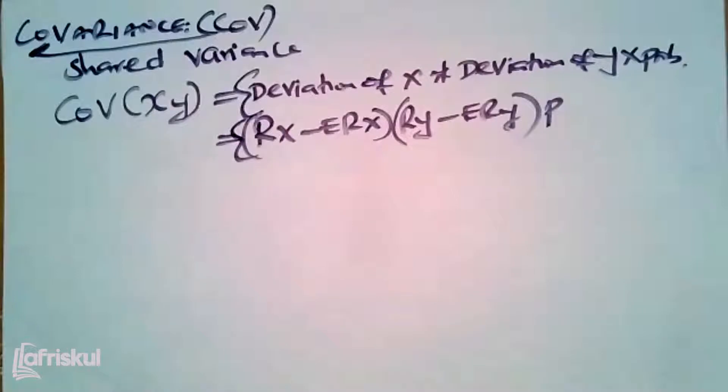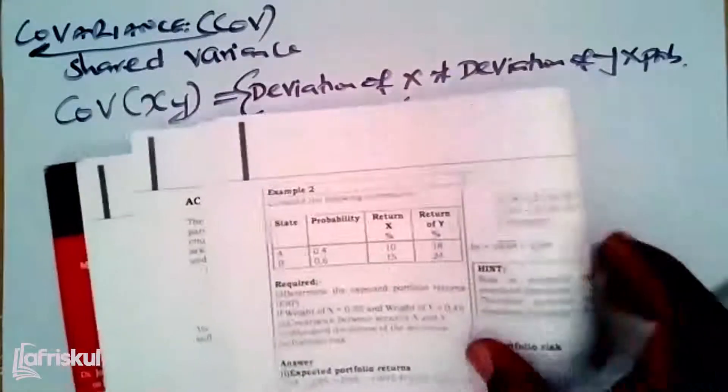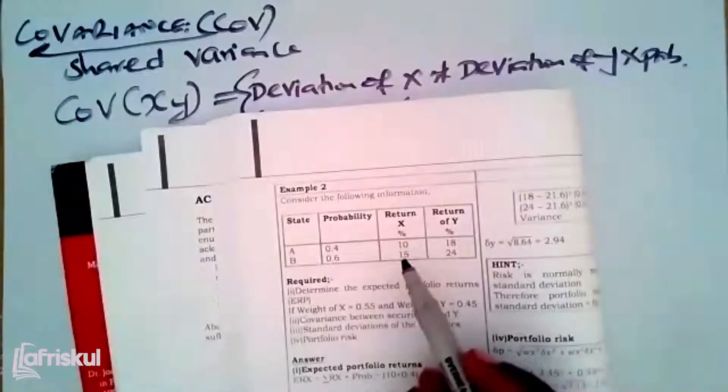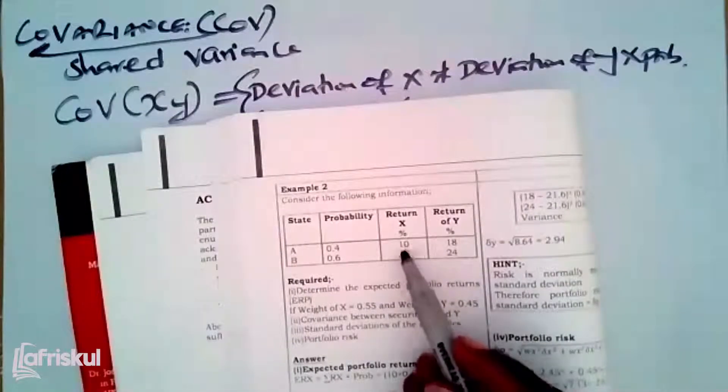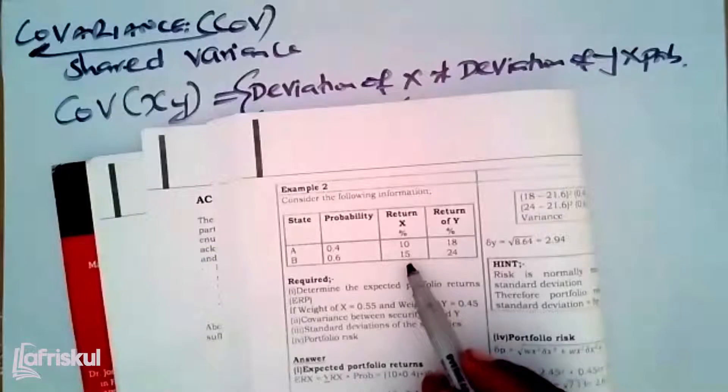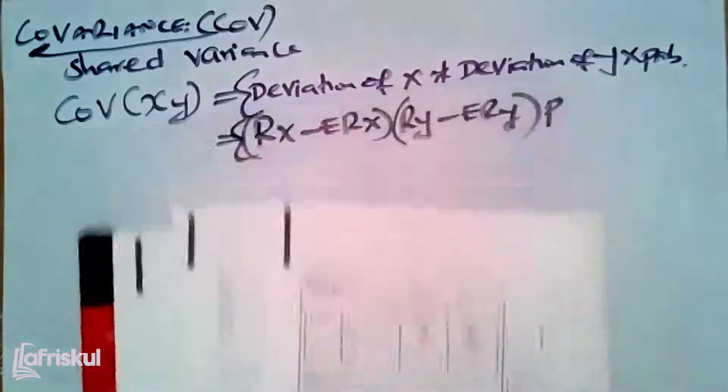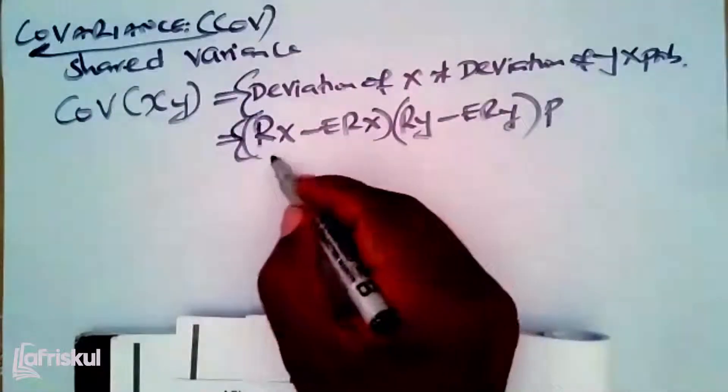So using the question that we had, I want us to populate, come up with a table where we shall be able to put all the values that we have. The actual returns of x, you can see them here - they are very visible. Actual returns of x, you can see 10 and 15. So the actual returns of x here, we have 10, 15.